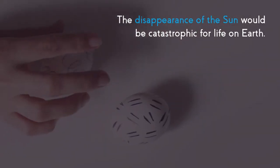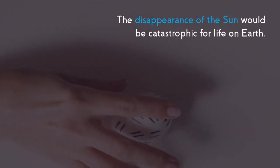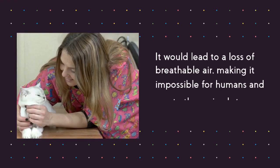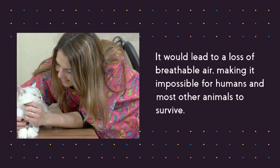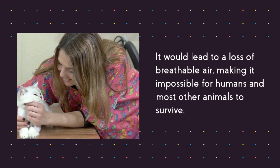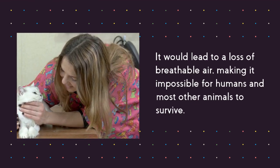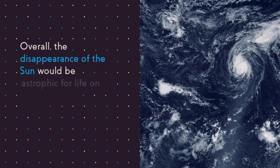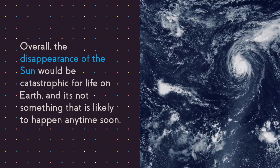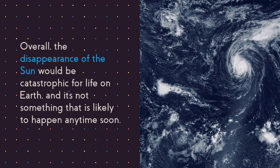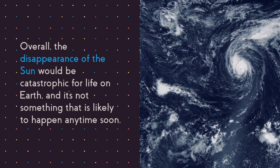The disappearance of the sun would be catastrophic for life on Earth. It would lead to a loss of breathable air, making it impossible for humans and most other animals to survive. Overall, the disappearance of the sun would be catastrophic for life on Earth.